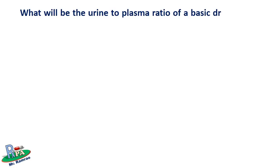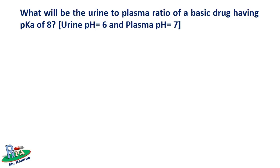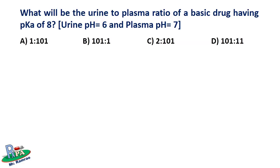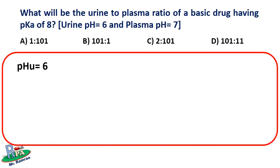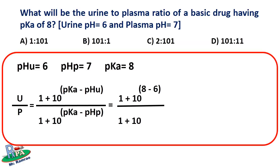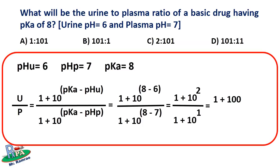Let's take one more example: what will be the urine-to-plasma ratio of a basic drug having pKa of 8, where urine pH equals 6 and plasma pH equals 7? I think you will love to solve this problem after knowing how to solve the previous one, so pause the video and solve it — the solution is coming after this timer. As in the previous case, you just have to use the formula for basic drugs and the rest is the mathematical calculation.